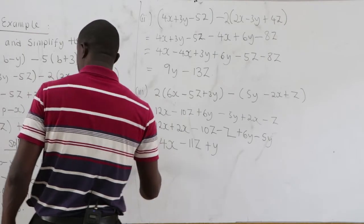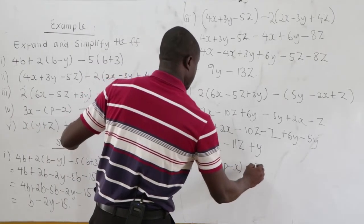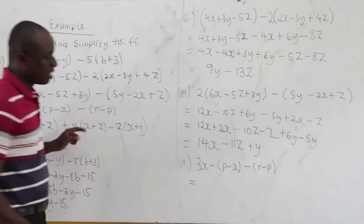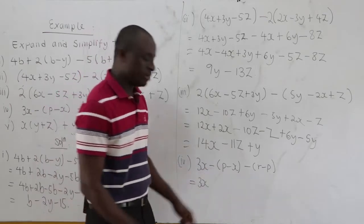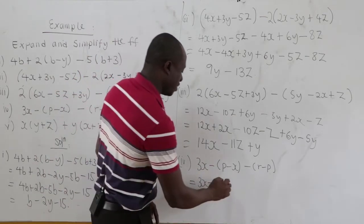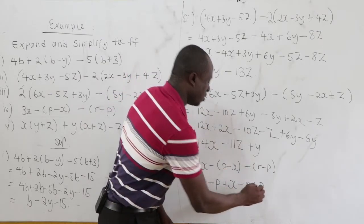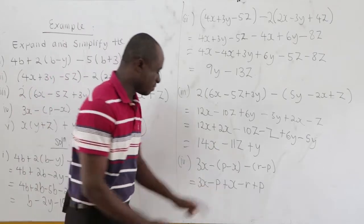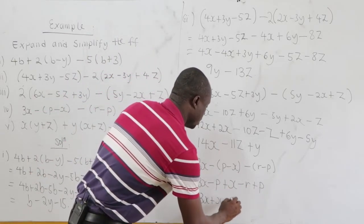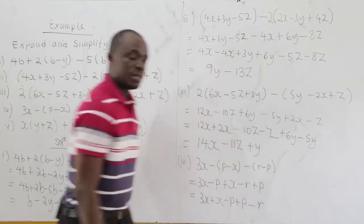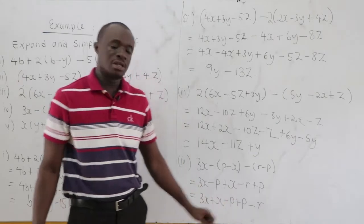Fourth: 3x minus 1 times p minus x minus 1 times r minus p. Expanding: 3x, then negative 1 times p equals negative p, negative times negative x gives positive x. Then negative 1 times r equals negative r, and negative times negative p gives positive p. Grouping: 3x plus x equals 4x, negative p plus p equals 0, leaving minus r. Answer: 4x minus r.